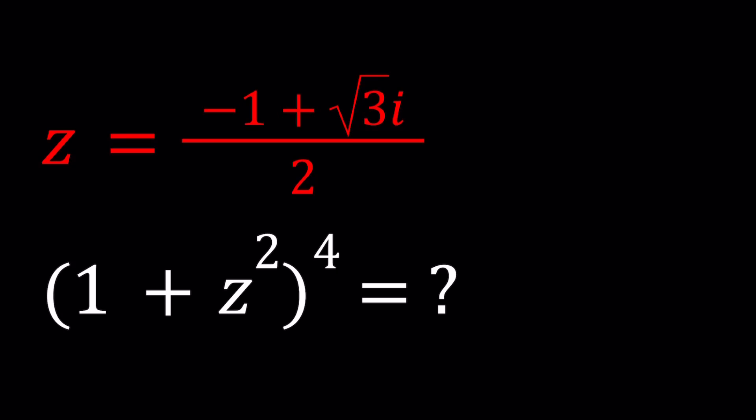So we are given that z is negative 1 plus root 3i divided by 2 and we're supposed to evaluate 1 plus z squared to the fourth power. So it's a really nice problem. It's not too hard. It's probably not too easy, somewhere in between.